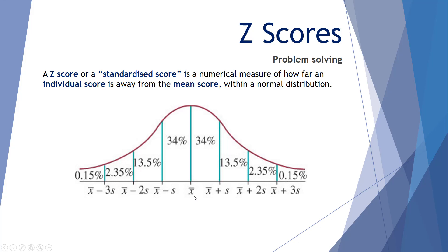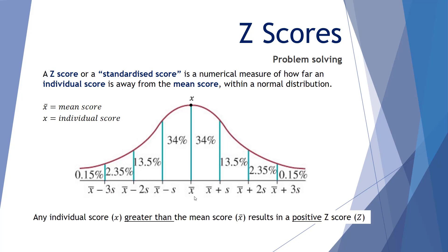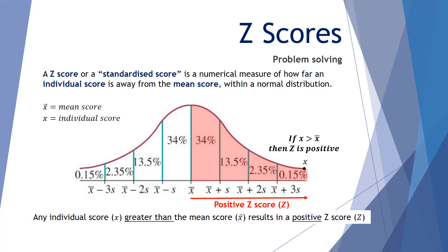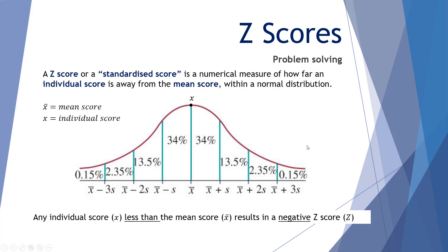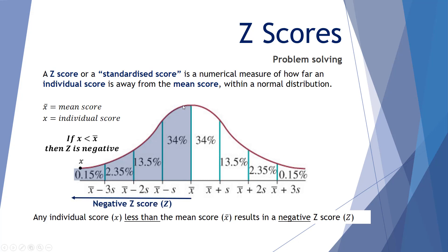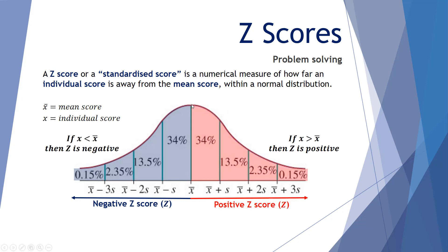Let's make some more sense of this with examples. X-bar is the mean score and x is the individual score anywhere on that curve — it could be a very low score, the mean, or a very high score. An individual score greater than the mean results in a positive z-score, while an individual score less than the mean results in a negative z-score. Any points to the left of the mean line represent a score less than the mean and will result in a negative z-score.